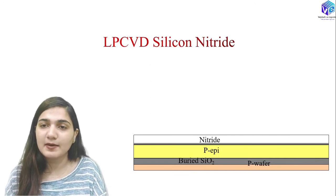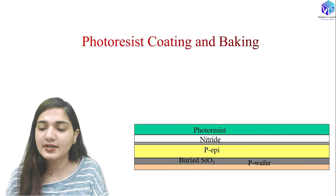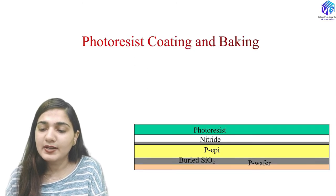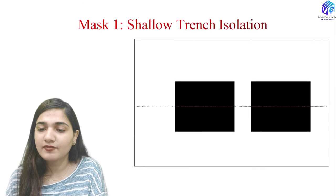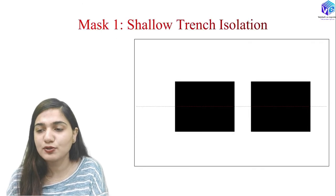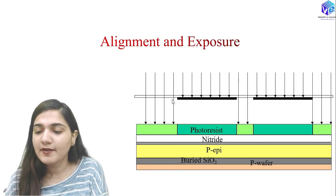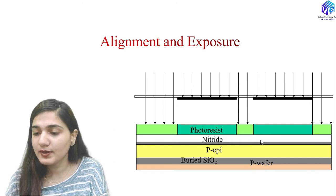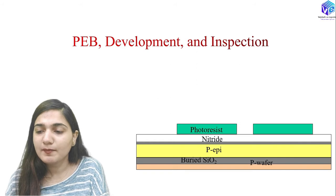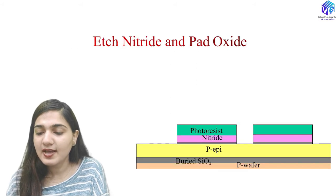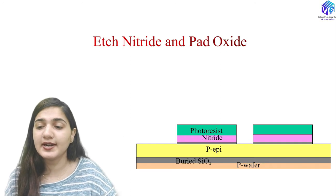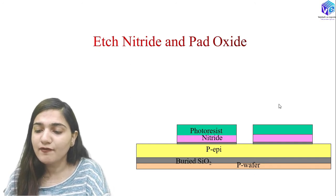We then do oxidation to deposit a pad oxide layer, followed by LP-CVD (low-pressure chemical vapor deposition) of silicon nitride. Photoresist coating and baking are done again, and mask one is used for shallow trench isolation (STI) formation. After alignment and UV-light exposure to change the photoresist characteristics, we proceed to PEB development and inspection, then etch out the nitride and pad oxide layer.